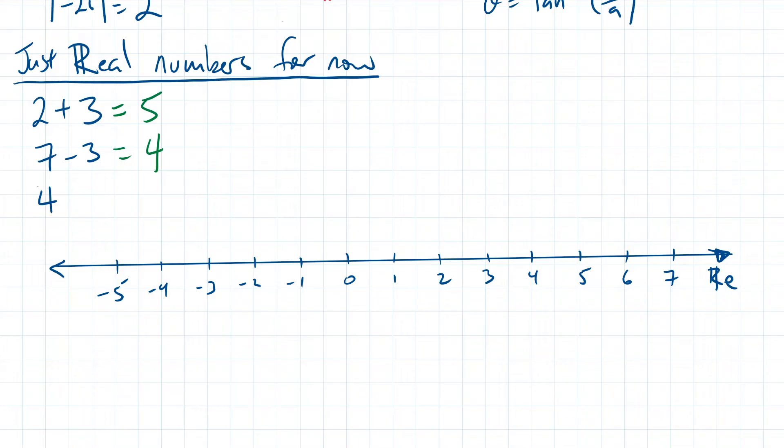Here's one more example. 4 subtracts 7. We start at 4, jump 7 spaces to the left, and end up at negative 3. All these numbers work beautifully, as they're all real numbers.